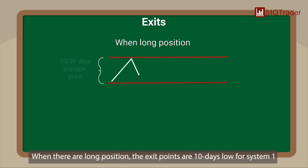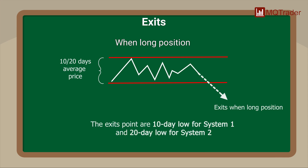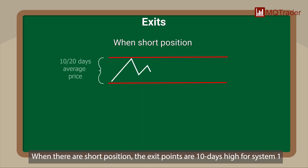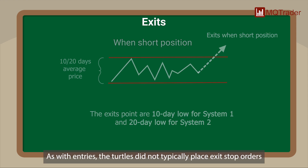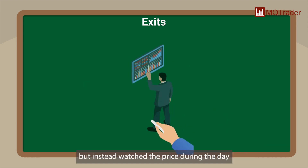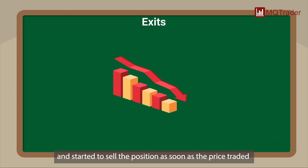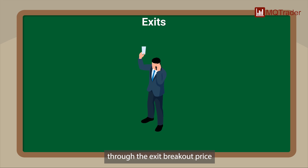When there are long positions, the exit points are the 10-day low for System One and the 20-day low for System Two. When there are short positions, the exit points are the 10-day high for System One and the 20-day high for System Two. As with entries, the turtles did not typically place exit stop orders, but instead watched the price during the day and began to sell the position as soon as price traded through the exit breakout price.